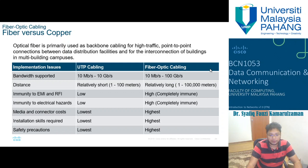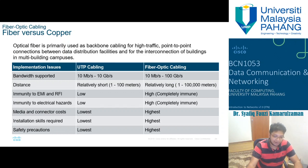Fiber optic cabling can transmit between 10 Mbps up to 100 Gbps and can go up to 100 kilometers. It is immune to EMI, RFI, and electrical hazards. However, it is quite expensive, requires properly trained technicians to install and maintain the equipment, and requires very high safety precautions.